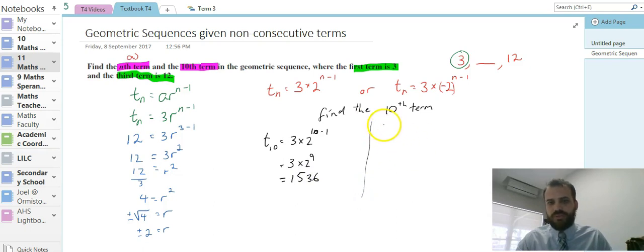Or it's possible that the 10th term is t10 equals 3 times negative 2 to the 10 minus 1, to the 9, equals negative 1536.